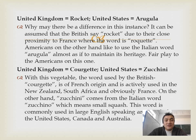United Kingdom: rocket. United States: arugula. It can be assumed that the British use 'rocket' due to their close proximity to French, where the food is also called rocket. Americans, on the other hand, like to use the Italian word 'arugula,' almost as if to maintain its heritage.